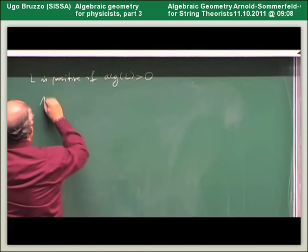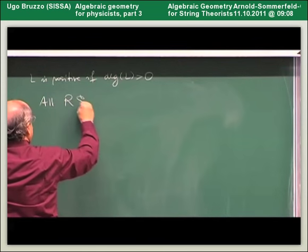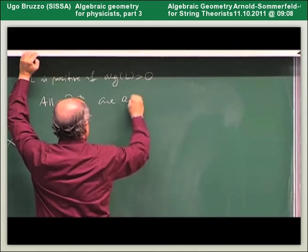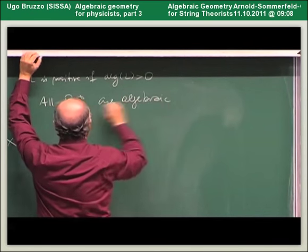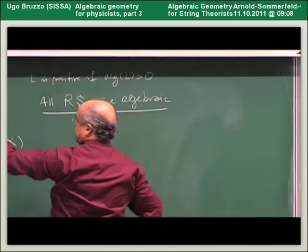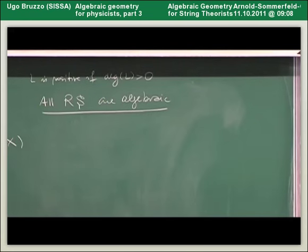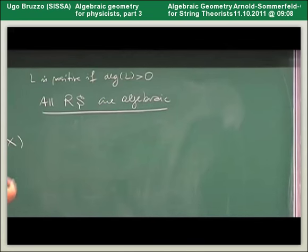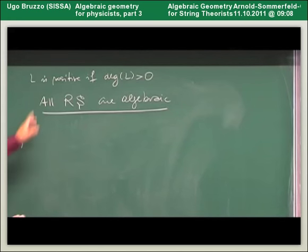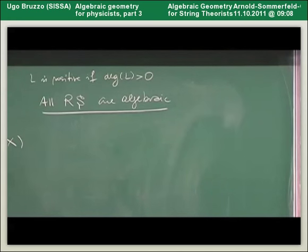Assuming compactness in the definition of Riemann surface — this is important — in dimension one, at least under the assumption of compactness, the answer is positive: all compact complex manifolds of dimension one are algebraic. The situation immediately changes as soon as we move to dimension two — this is no longer true.